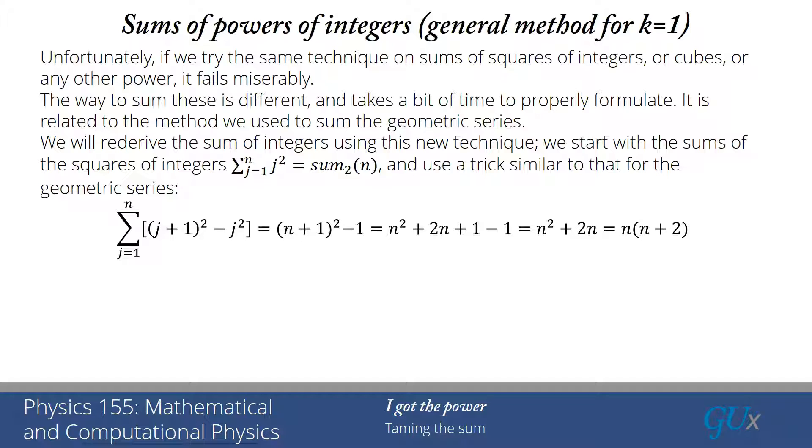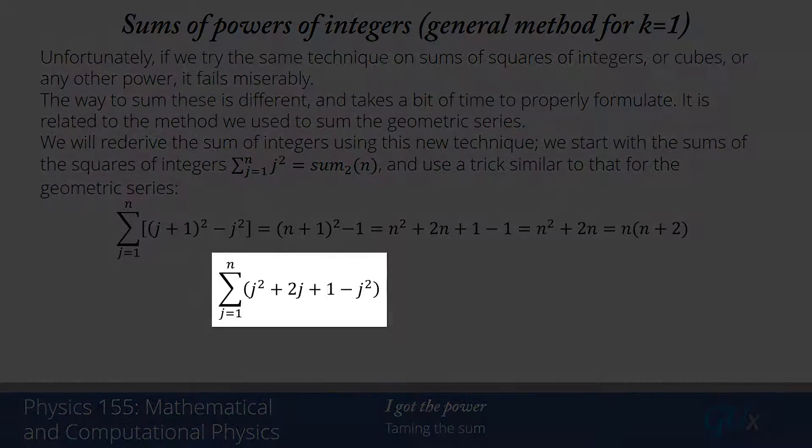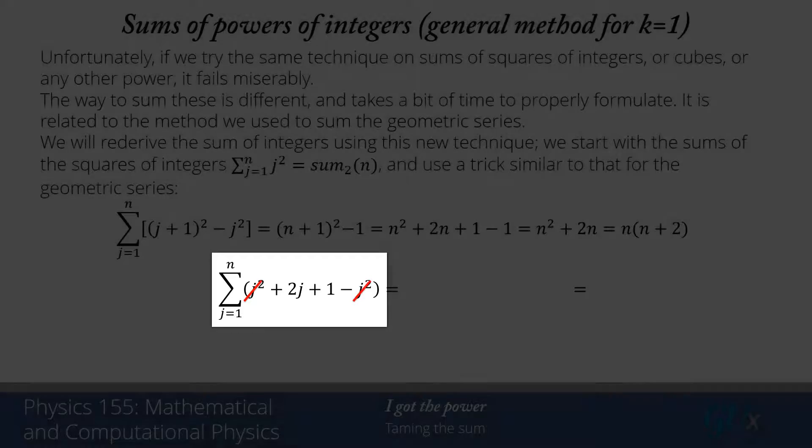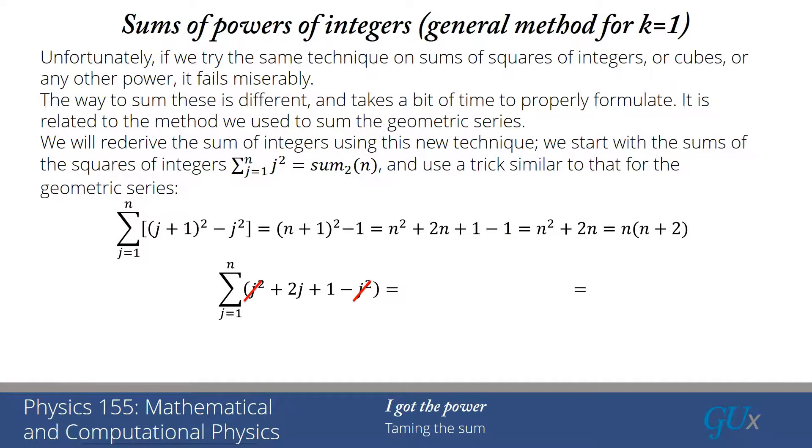So that was one way that we evaluated this sum. Now we're going to evaluate it a separate way. We're going to expand j plus 1 squared. j plus 1 squared equals j squared plus 2j plus 1 and the j squareds cancel out. What's left is the sum of integers from 1 to n plus the sum of 1 from 1 to n. So we call that twice the sum of integers to the first power plus the sum of integers raised to the zeroth power. The sum of 1 from j equals 1 to n, well that's n terms each term being 1, so that sum is just equal to n.